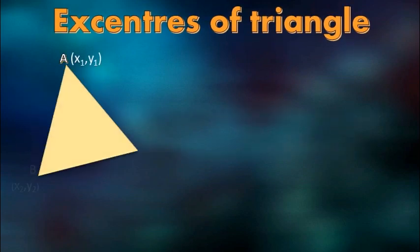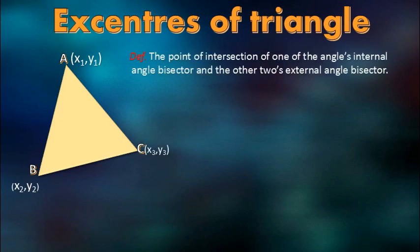First let's make up a triangle. Let's name it ABC. The definition of excenters of a triangle is that it is the point of intersection of one of the angles internal angle bisector and the other two's external angle bisector.